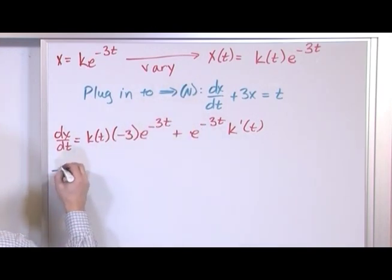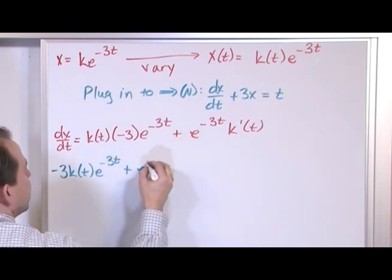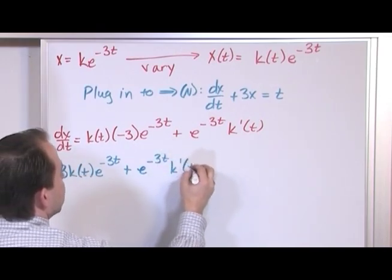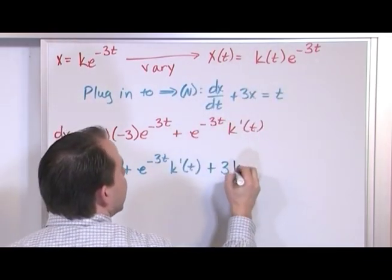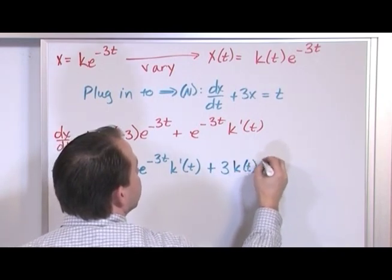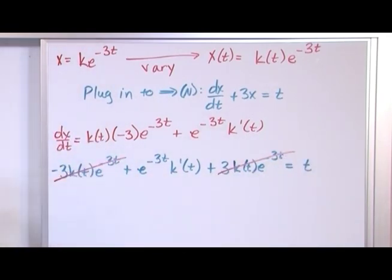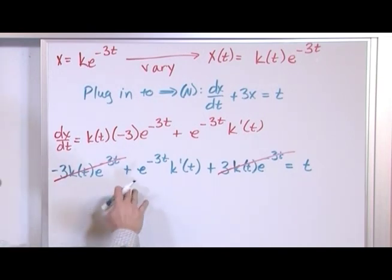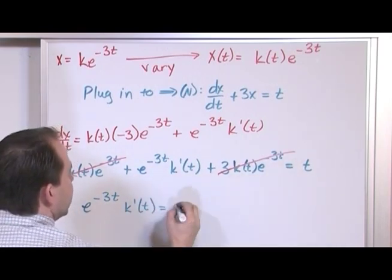Substituting in, we have: negative 3·k(t)·e^(−3t) plus e^(−3t)·k′(t), plus 3 times x — where x is k(t)·e^(−3t) — equals t on the right-hand side. Now look at what happened: we have a nice cancellation between the negative 3·k(t)·e^(−3t) and the plus 3·k(t)·e^(−3t). You'll always see that. Always look for that when you plug into the non-homogeneous version — it has to happen, otherwise you did something wrong. So we're left with e^(−3t)·k′(t) equals t.